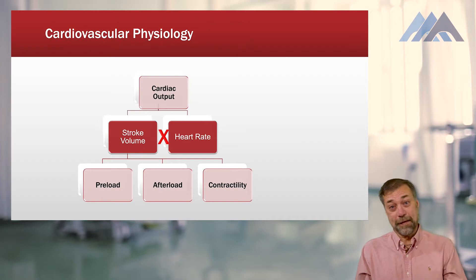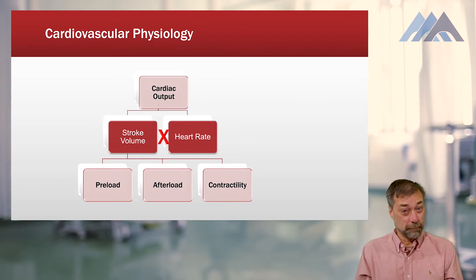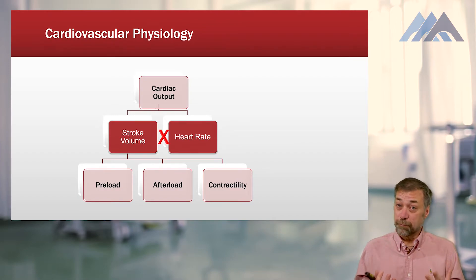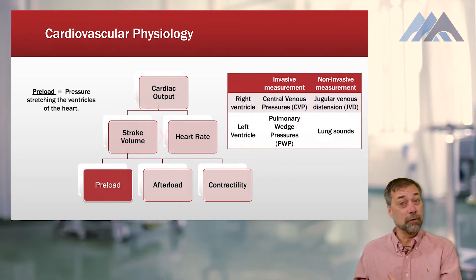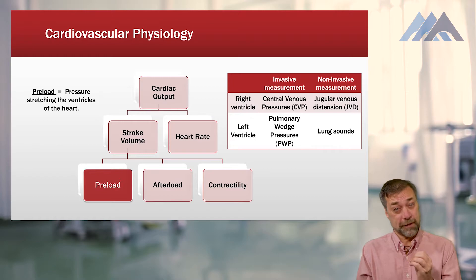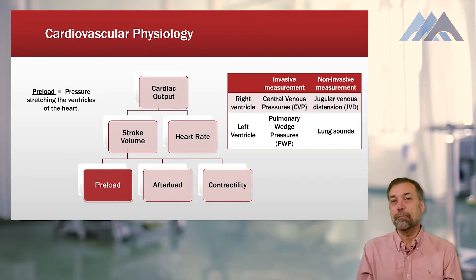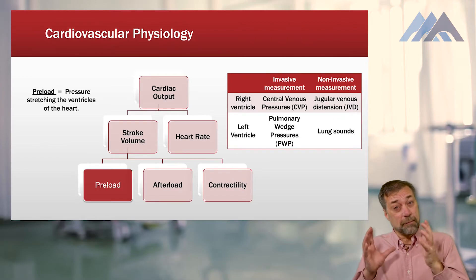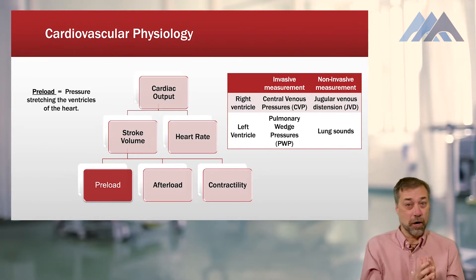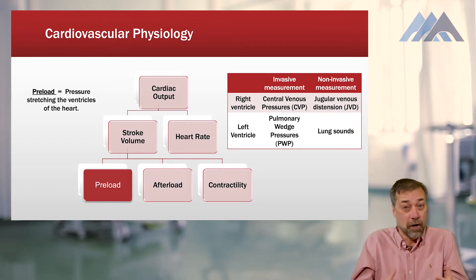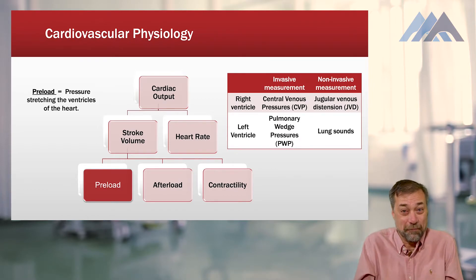Now three things make up stroke volume. Stroke volume is composed of preload, afterload, and contractility. Look at the prefix of these to help you figure out what they are. Preload — the prefix being 'pre,' and pre means before. So preload is the amount of blood coming into the heart. It's what's filling the heart; it's the stuff before.